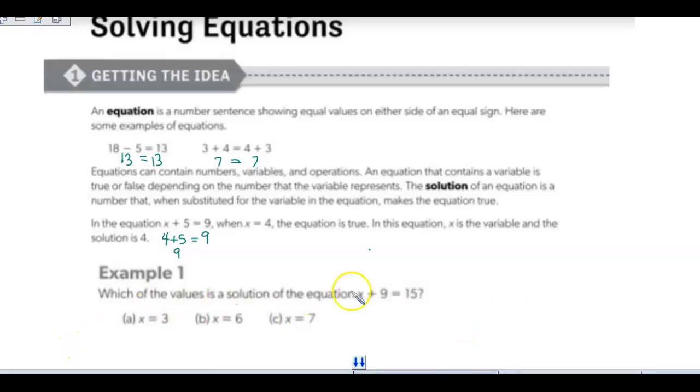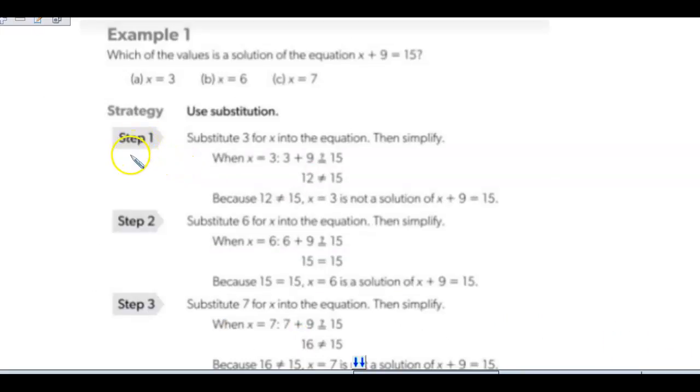Sometimes, they'll give us possible solutions, and we have to pick the one that is correct. In that case, we can use substitution, just like we did with x equals 4. I could take and replace the x in our equation x plus 9 equals 15. I can replace it with 3. And when I do so, 3 plus 9 is 12, and that is not equal to 15. So this is a false statement, it's not true. So this is not a solution.